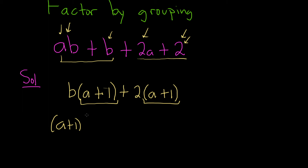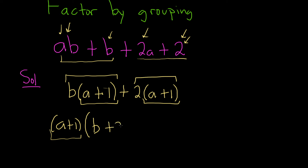So now we're going to factor this out. We ask: what do we multiply by A plus 1 in order to get B times A plus 1? Well, we're just missing a B, so you write what's missing. Same thing here — what do you multiply by A plus 1 in order to get 2 times A plus 1? You're just missing a 2, so you put a 2 here. That would be the final answer: A plus 1 times B plus 2.